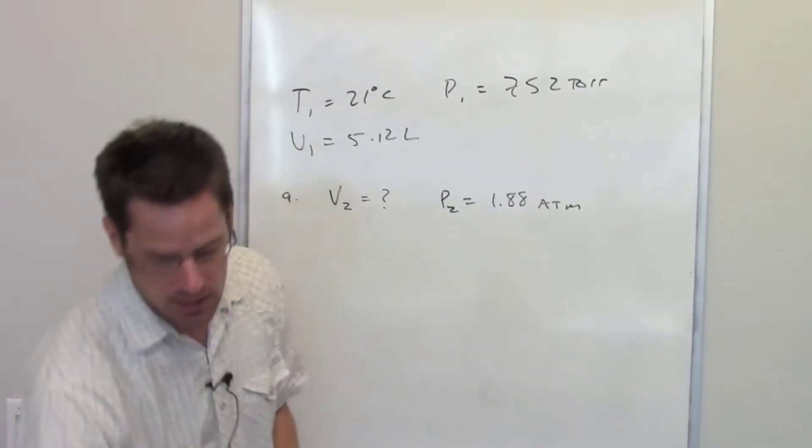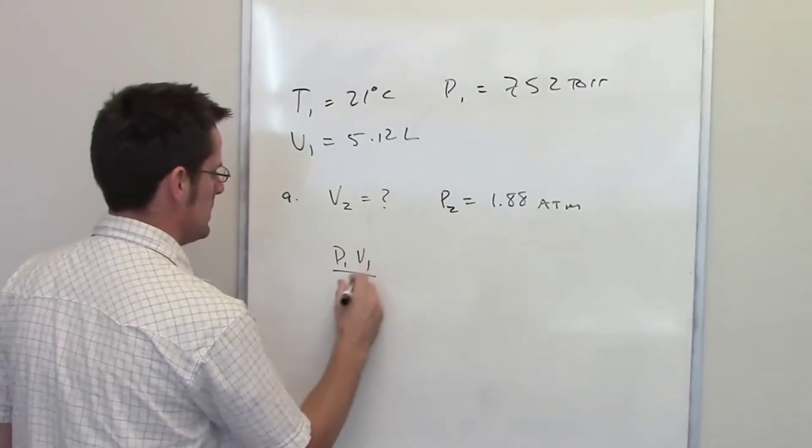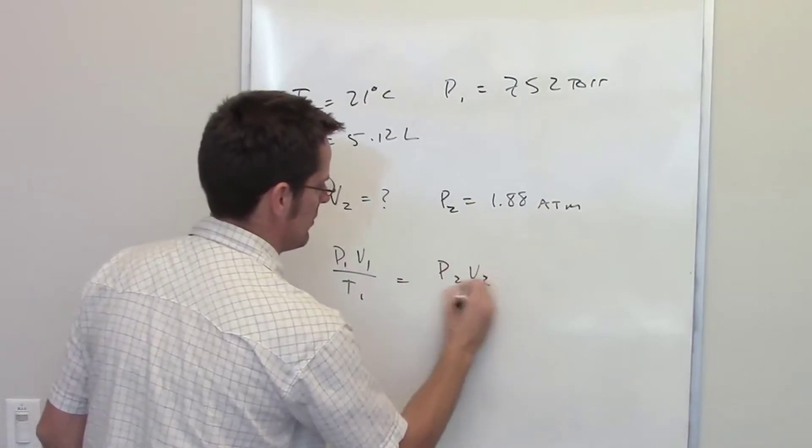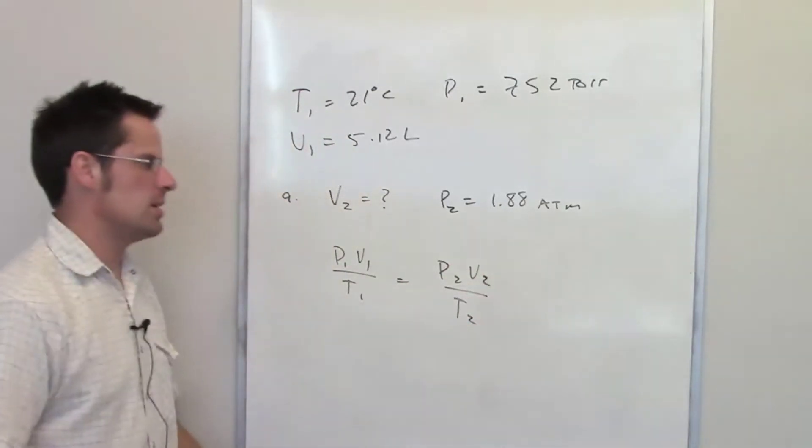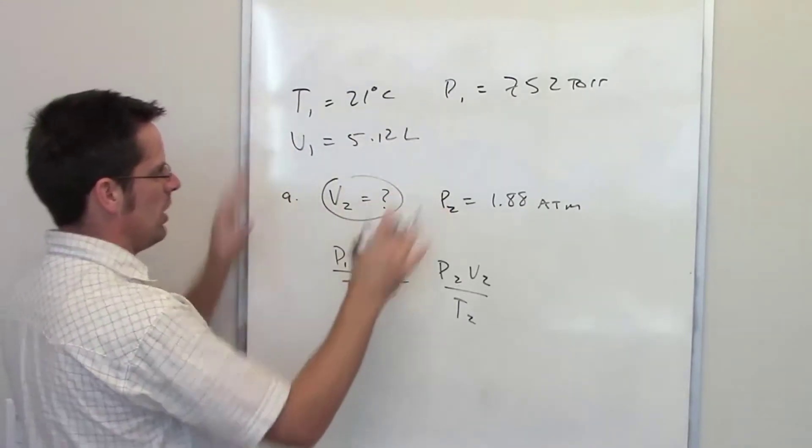And so that takes us once again to the combined gas law, which says that P1 times V1 divided by T1 equals P2 times V2 divided by T2. This is a case where we're trying to determine what the final volume is going to be if all else is held constant.